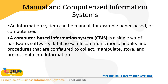The difference between manual and computerized systems is huge. Manual file systems, as seen in old offices, maintained data in folders and registers, making it really difficult to search and update information. An information system can be manual (paper-based) or computerized. A computer-based information system (CBIS) is a single set of hardware, software, database, telecommunication, people, and procedures configured to collect, manipulate, and store data.